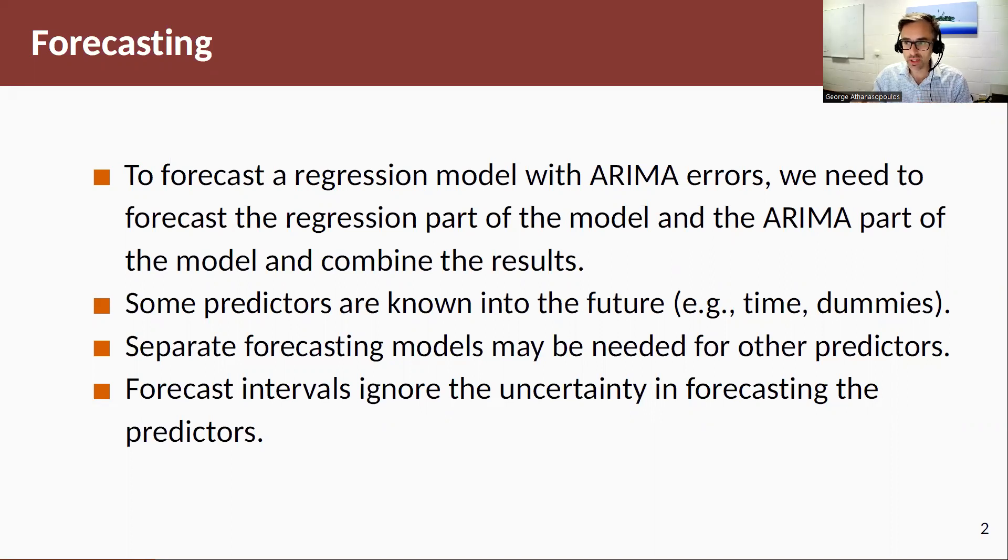And you need to forecast both these and combine them. R and the Fable package will take care of the ARIMA part of the model, but you will need to provide forecasts for the regression part. Now if we have some predictors, as we did in Chapter 7, that we know their future—time, dummies, or whatever—they're fine. We can give them the values.